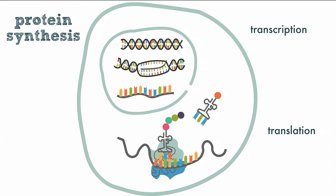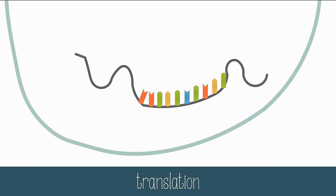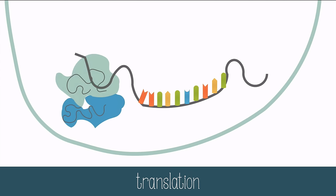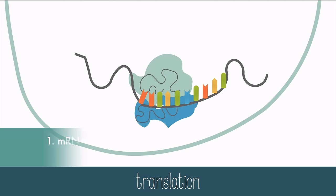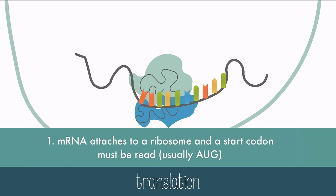Translation occurs in the cytoplasm of the cell wherever there's a ribosome. To get translation started, mRNA attaches to a ribosome and a start codon must be read — it's usually AUG. I remember that school starts in August, and that helps me remember AUG. The first amino acid is brought in by tRNA, and the anticodon on tRNA matches up to the codon on mRNA.